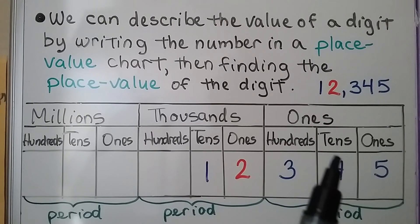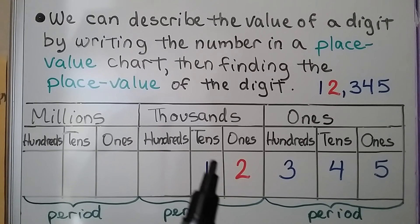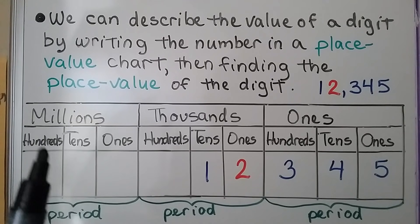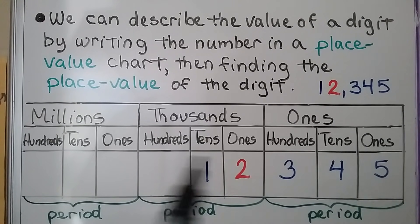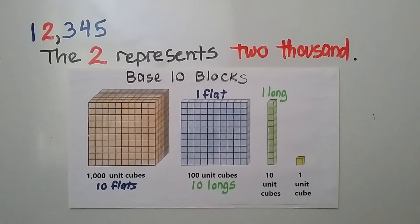Our ones period has a ones, tens, and hundreds. Our thousands period has a ones, tens, and hundreds. And our millions period has a ones, tens, and hundreds. They all have ones, tens, and hundreds. When we write the number into the place value chart, we can see where the two is — it's in the one thousands place. The two represents two thousand.